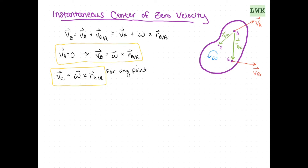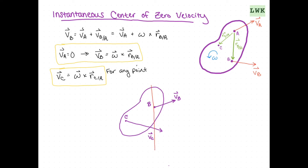Normally we can observe our instantaneous center by drawing. We're going to look at this object with points B and C and velocities VB and VC. We draw a line perpendicular to VB in red, and then do the same thing for point C. Where these two lines intersect is going to be our point A. Our lines intersect here in blue, and this is our instantaneous center of zero velocity.